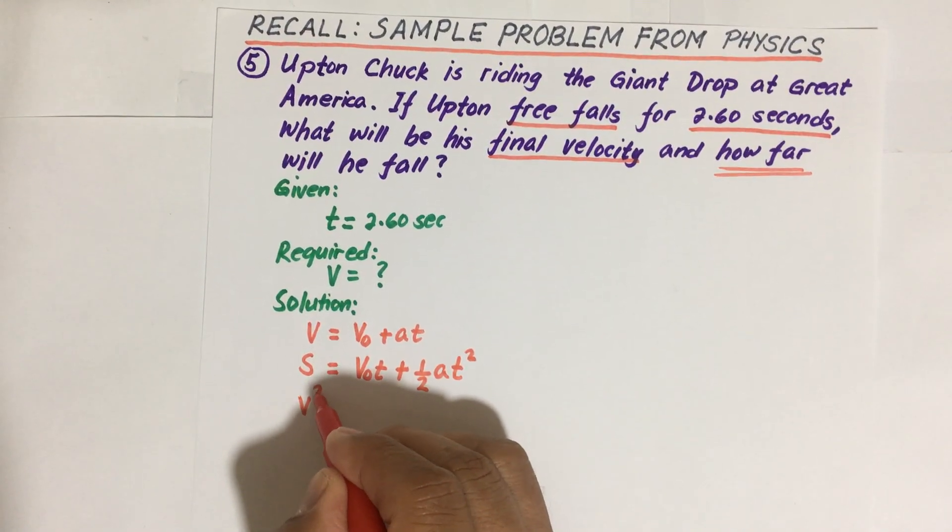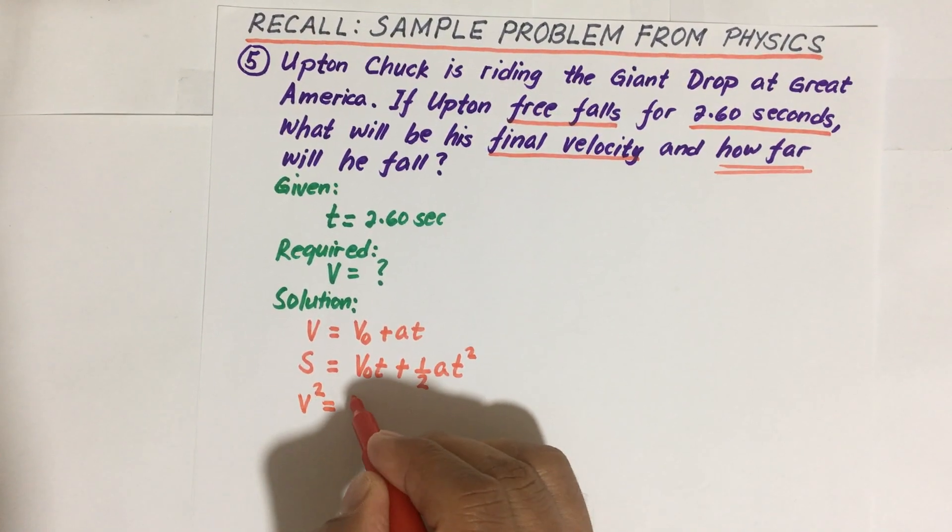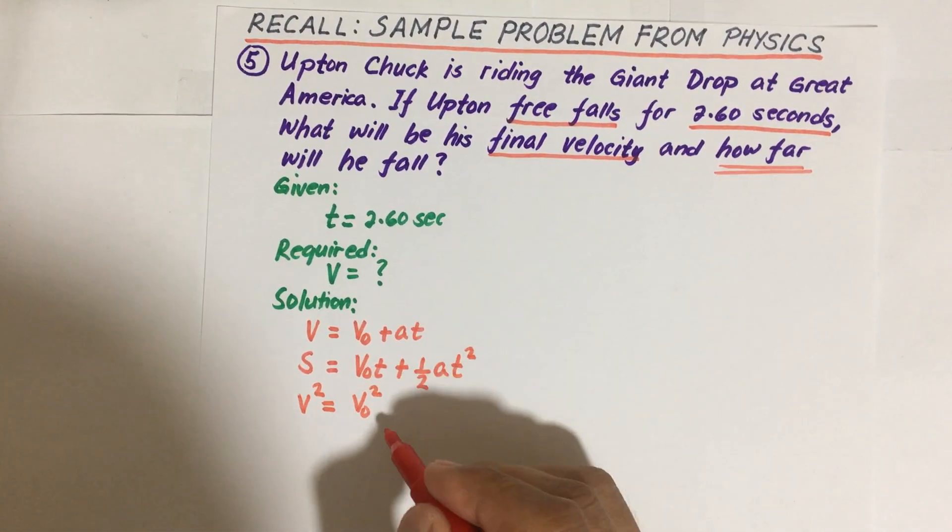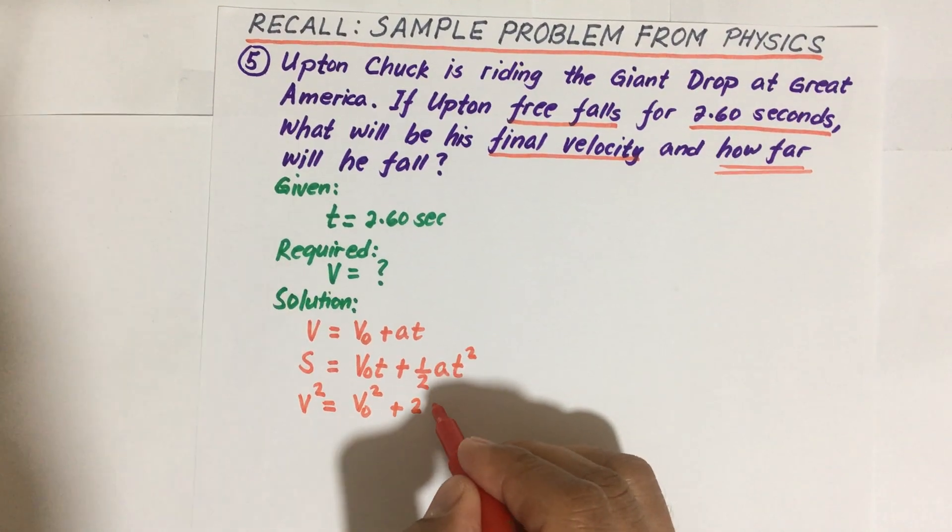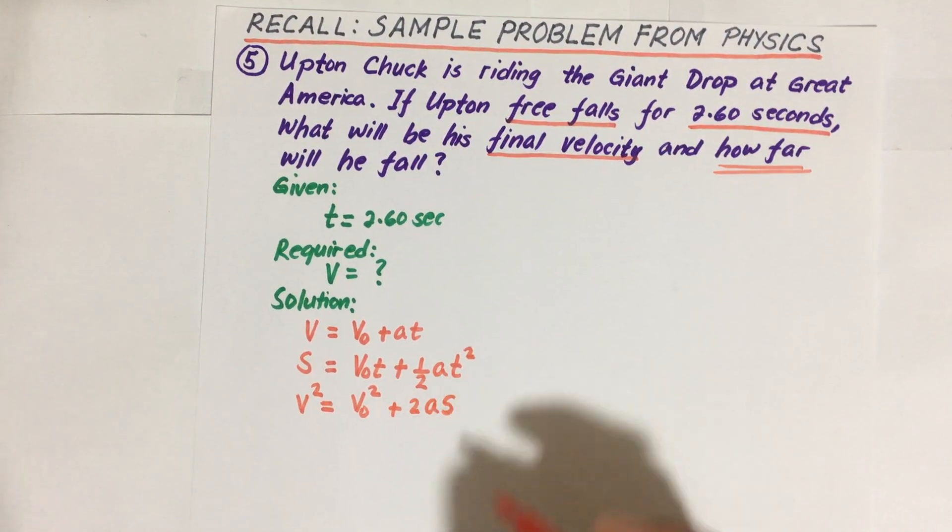And we have the third formula: the final velocity squared equals the square of the initial velocity, then plus twice the product of the acceleration and the displacement S.